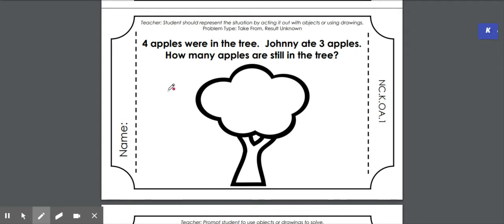And at the beginning of our problem here, it tells us that there were four apples in the tree. So Ms. Ingram is going to go ahead and draw four apples. There's one, two, three, four. Okay, there are my four apples.